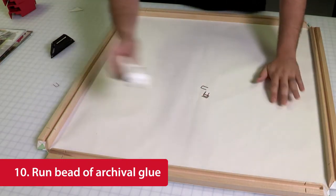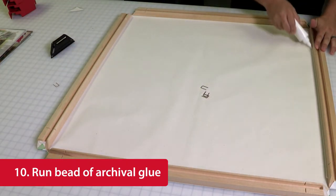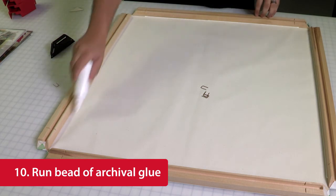Next, run a bead of archival glue along the edge of each of the four stretcher bars. The glue is an important step to ensure that your print stays in place.